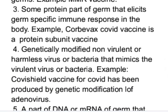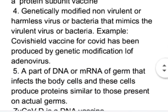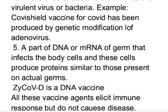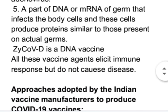Next, vaccines may be made up of some genetically modified non-virulent or harmless virus or bacteria that mimics the virulent virus or bacteria. For example, Covishield vaccine for COVID has been produced by genetic modification of adenovirus. Vaccines may also be made up of a part of DNA or mRNA of a germ that infects body cells, and these cells produce proteins similar to those present on actual germs. ZyCoV-D is a DNA vaccine. All these vaccine agents elicit immune response but do not cause disease.